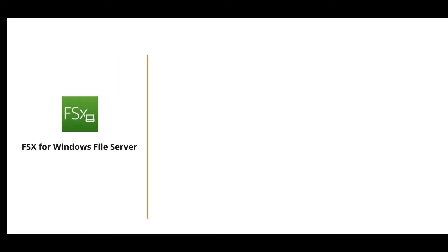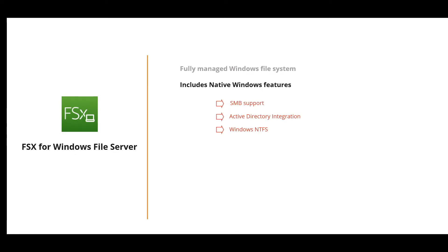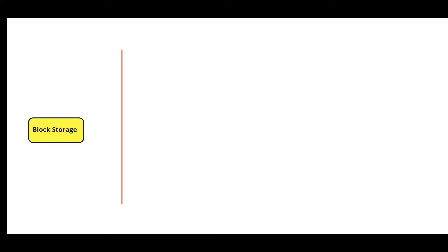If you are running Windows workloads on AWS, there is another option called Amazon FSx for Windows File Server. This is a fully native Windows file system, as opposed to the Linux file system with EFS. It includes native Windows feature support like SMB, Active Directory integration, and Windows NTFS, and it also utilizes SSD drives for low latency.